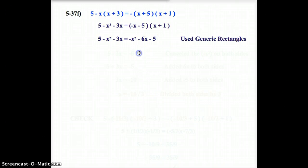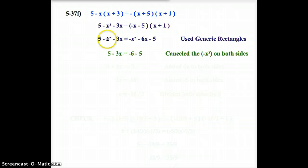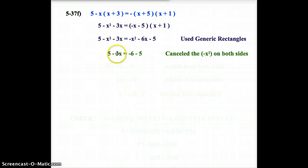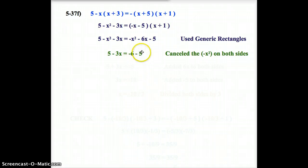So, my next step here is I noticed on both sides that I have a negative x squared on the left, and I have a negative x squared on the right. If I have the exact same two terms on both sides, they can cancel each other. So, now I'm left with 5 minus 3x equals negative 6. Oh, here's a mistake.